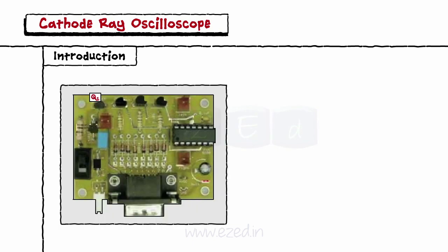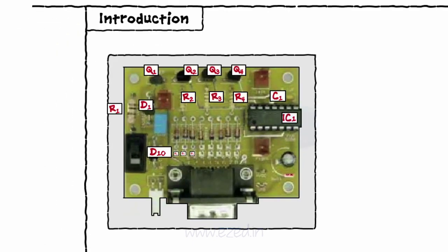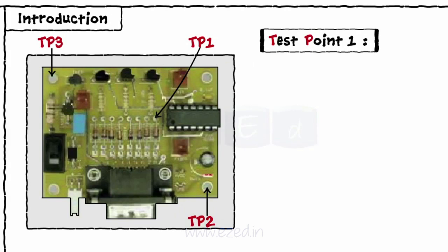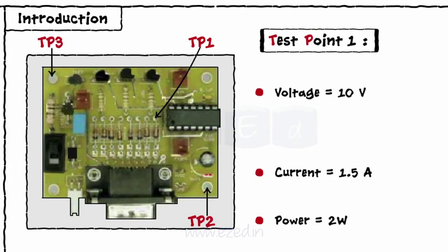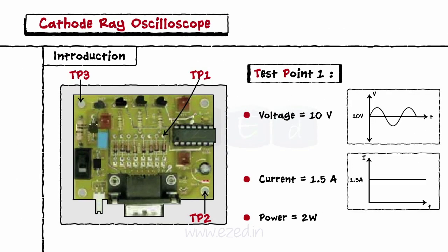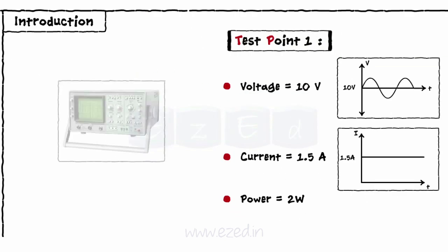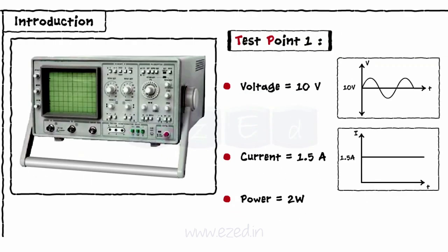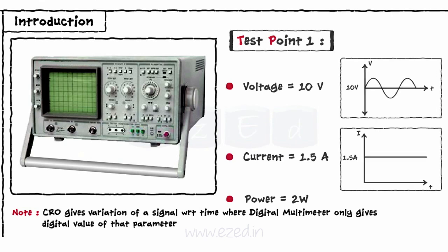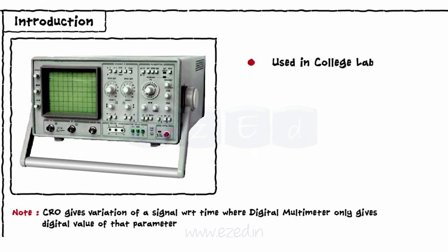Every single electronic circuit consists of multiple components connected to each other. At every point, we have to test the working of a circuit with the help of some parameters like voltage, current, dissipated power, etc. We also study the waveforms of these parameters to decide the working of a circuit. A very commonly used electronic instrument for this testing is a cathode ray oscilloscope, CRO. It is a widely used measuring instrument in college laboratories as well as in industries.